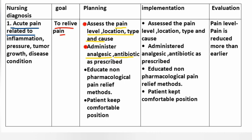Administer analgesics and antibiotics as prescribed. Advocate non-pharmacological pain relief methods. Keep patient in a comfortable position. Implementation: assessed pain level, location, type and cause. Administered analgesics and antibiotics as prescribed. Educated patient on non-pharmacological pain relief methods. Kept patient in comfortable position. Evaluation: pain level is reduced more than earlier.